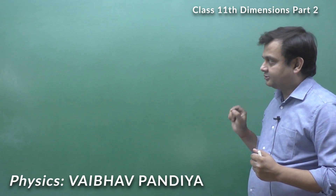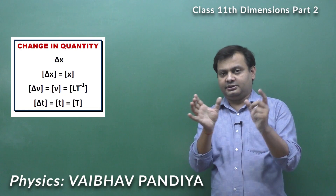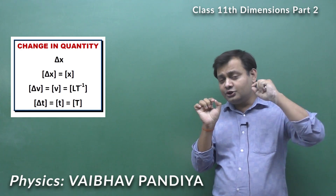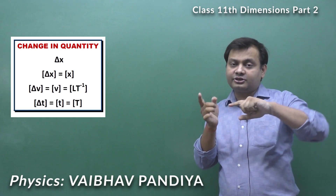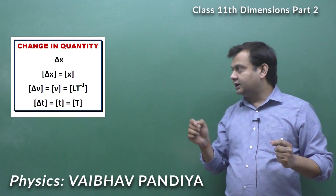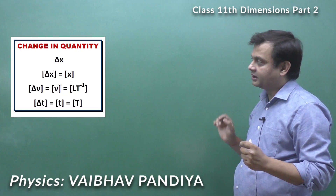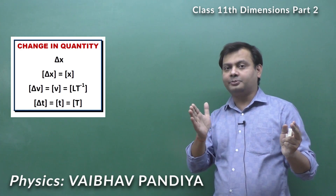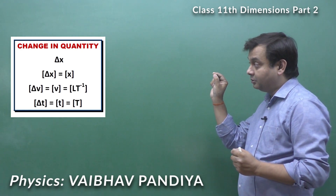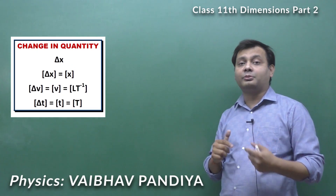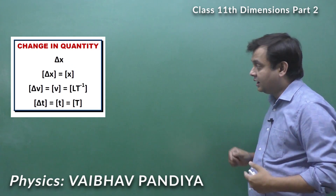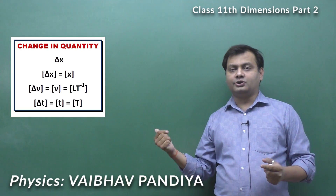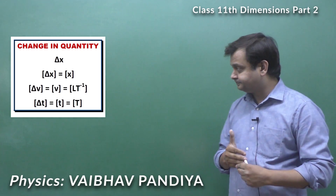When we write delta x, it means a change in x. Whenever you find the dimensional formula for a change in any quantity, it is the same as that of the quantity itself. For example, the dimensional formula for delta v (change in velocity) is the same as velocity: LT⁻¹. And the dimensional formula for delta t (change in time) is the same as time: T.